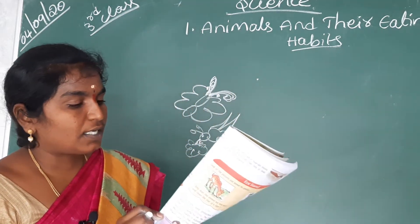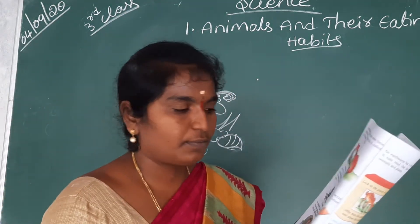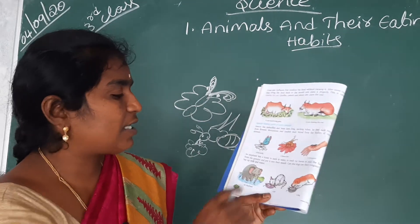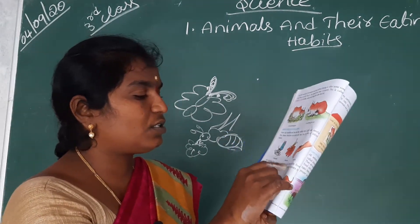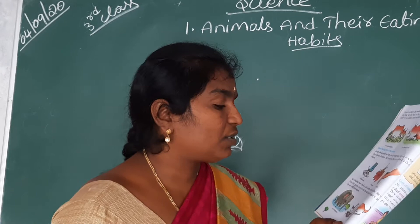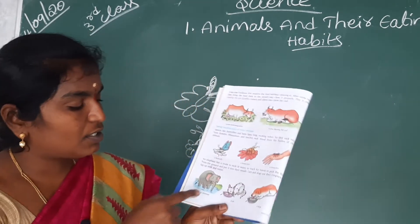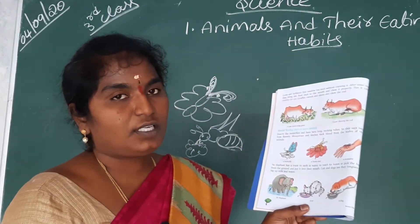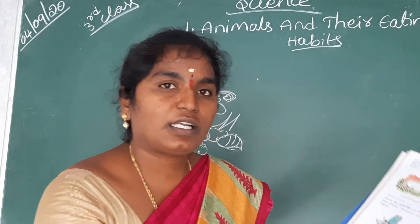An elephant has a trunk to suck in water, to reach for leaves, and to pick food from the ground and put it into its mouth. The trunk is used to take water from the pond and to pick leaves from the plants.